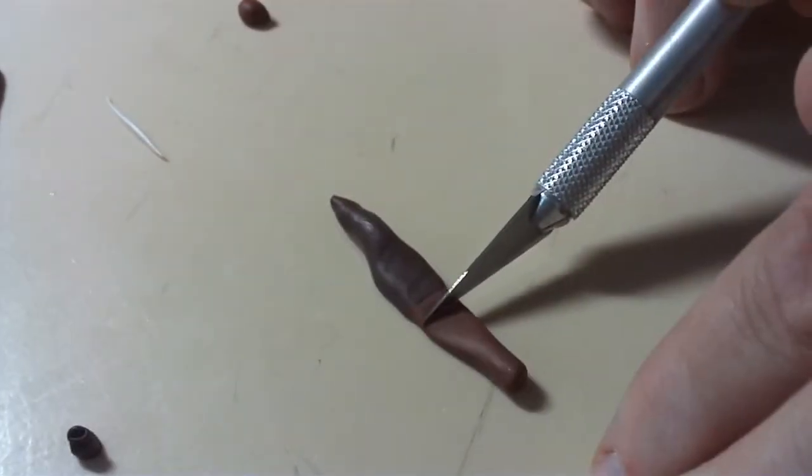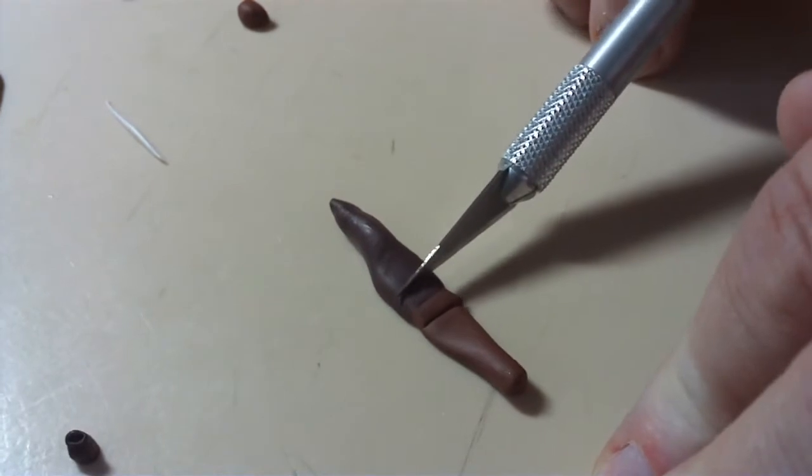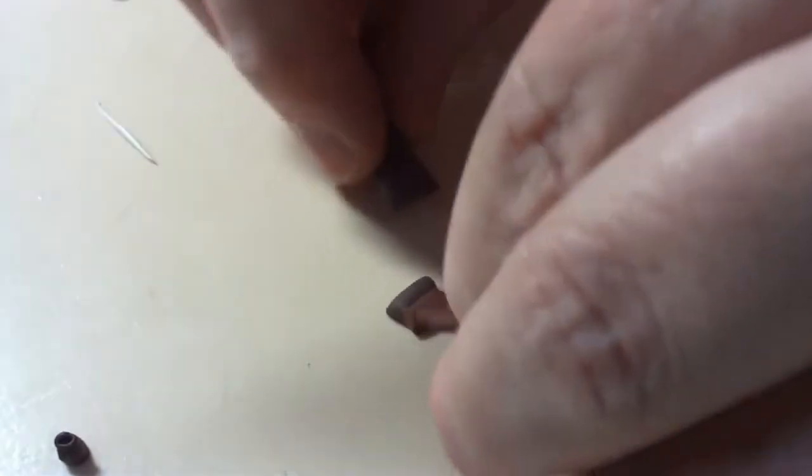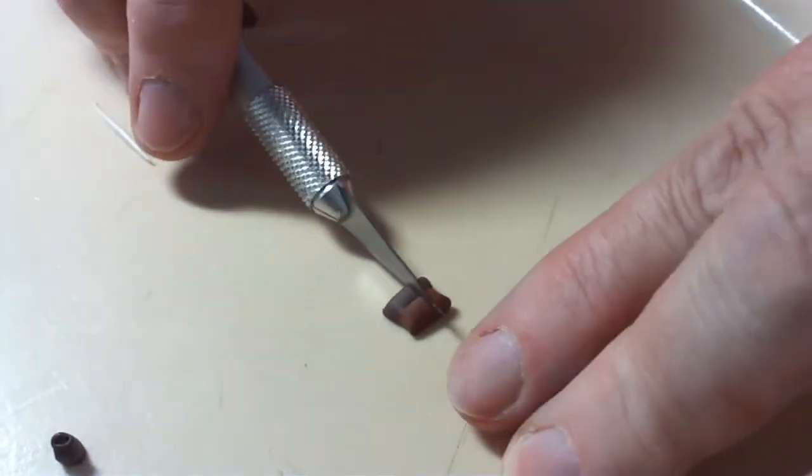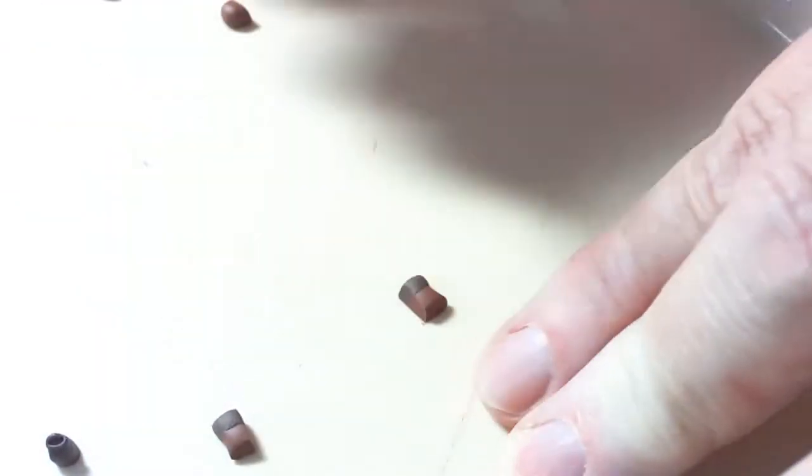For a two-tone chocolate, press together the ends of a flattened log of milk and dark chocolate. Cut on either side of where they join, then cut that square in half. Round the ends a little and there you are.